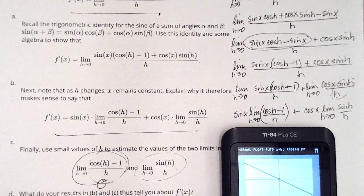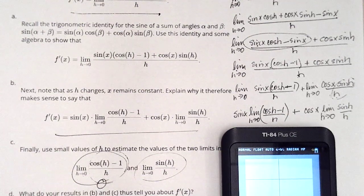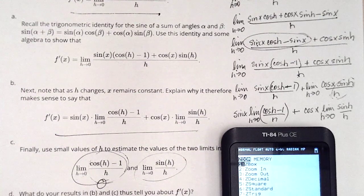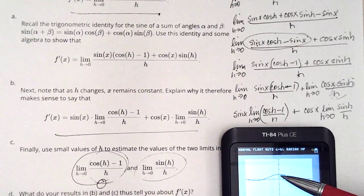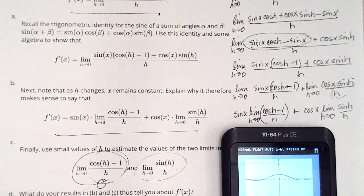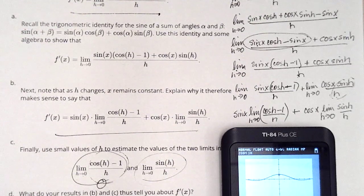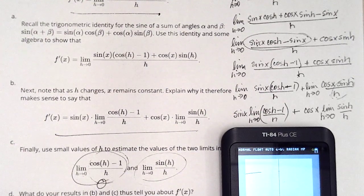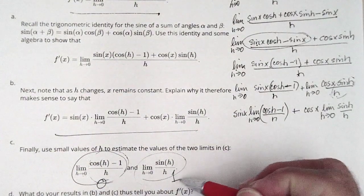Now I want to look at the other limit — sine h over h. I'll go back and change this to sine and get rid of the minus 1. I want to see what this one's going towards. Zooming in on the graph, it's headed towards what looks like 1. I zoom in again and it still looks like it's headed towards 1. So I think this limit is 1.